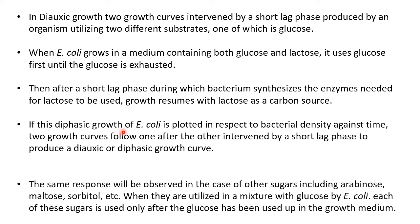So if this diauxic growth of E. coli is plotted with respect to bacterial density, or number of bacterial cells, against time, then you will see two growth curves which follow one after the other, intervened by a short lag phase, and thus it produces a diauxic or diphasic growth curve. The same response will be observed in the case of other sugars as well, like arabinose, maltose, sorbitol, etc. When they are combined with glucose in a culture media, E. coli always prefers glucose first and then switches to the other sugars like arabinose and maltose.